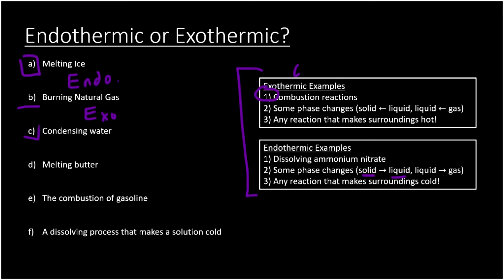What about condensing water? We're taking water from the gas phase to the liquid phase, which is one of our exothermic examples — bringing molecules closer together, so that's exothermic. D is melting butter: a melting process takes solid to liquid, so that's endothermic. E, the combustion of gasoline: any burning process is always exothermic. Finally, F — a dissolving process that makes a solution cold: if it makes things cold, it's endothermic, because endothermic processes absorb heat from the surroundings.